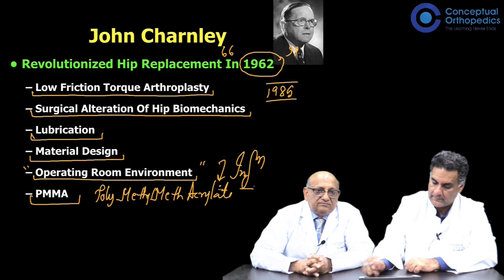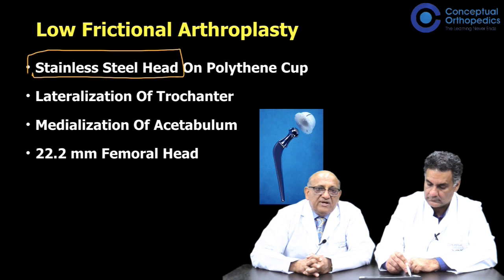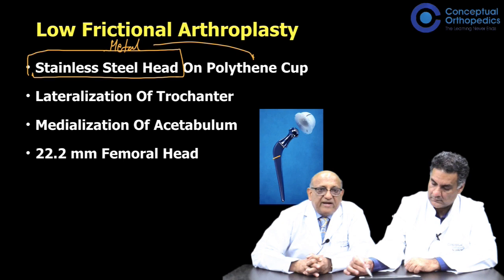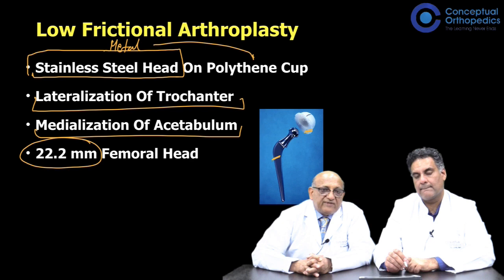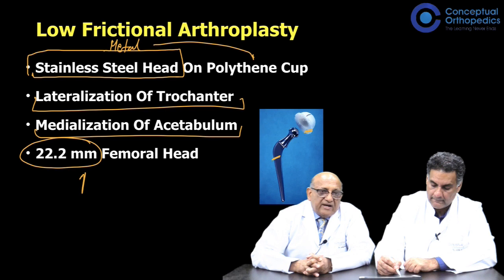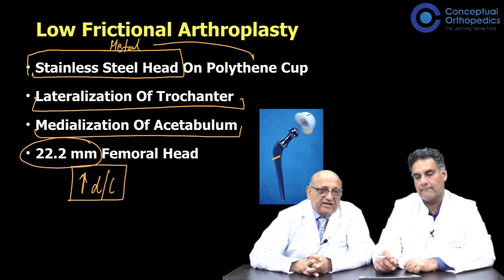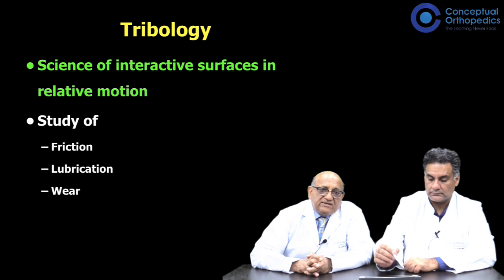Charnley's low friction arthroplasty consisted of a stainless steel head on a polyethylene cup. He lateralized the trochanter, medialized the acetabulum, and used a much smaller femoral head than the one removed — typically 22.2 millimeters. Because of this small head size, his hips had a higher incidence of dislocation, and that was the biggest problem of the Charnley hip. Tribology is the science of interactive surfaces in relative motion to each other.